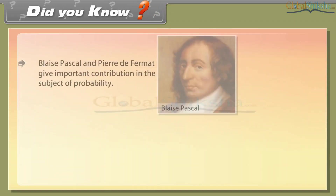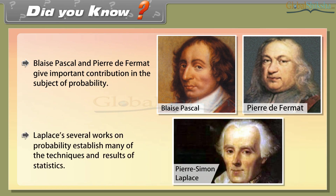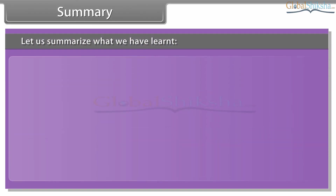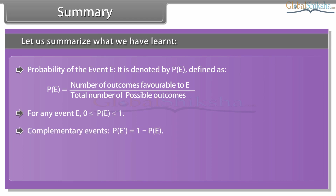Did you know? Blaise Pascal and Pierre de Fermat gave important contributions in the subject of probability. Laplace's several works on probability established many of the techniques and results of statistics. Summary: probability of event E equals number of outcomes favorable to E by total number of possible outcomes. For any event E, 0 ≤ P(E) ≤ 1. Complementary events: probability of event not E is equal to 1 minus probability of event E. Impossible event: the probability of an impossible event is 0. Sure event: the probability of a sure event is 1.